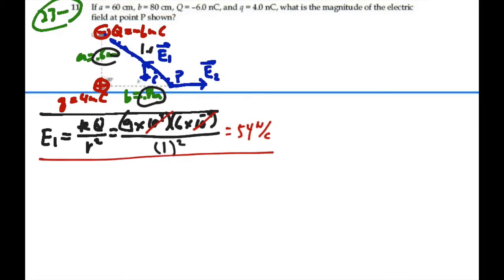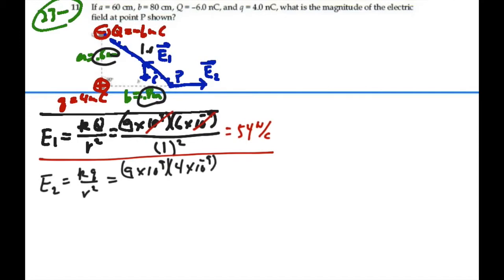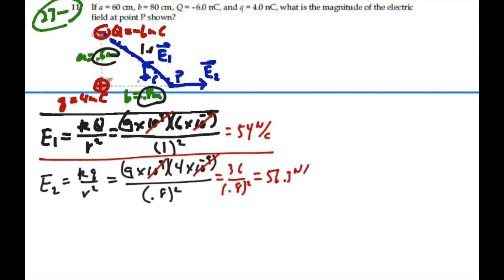E2 is going to be k times little Q over R squared — 9 times 10 to the 9, times 4 nanocoulombs (4 times 10 to the minus 9), over the distance between little Q and point P, which is distance B = 0.8 meters, squared. Again the 10 to the 9 and 10 to the minus 9 cancel, giving us 36 divided by 0.8 squared, which equals 56.3 newtons per coulomb.